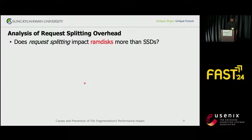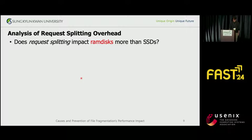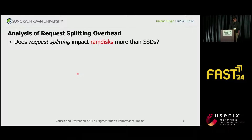RAM disk uses the main memory as a virtual storage device. Naturally, it is a lot faster than SSDs, even for random accesses. If SSDs' speed highlights performance loss due to request splitting from fragmentation, then RAM disk will show an even bigger drop.